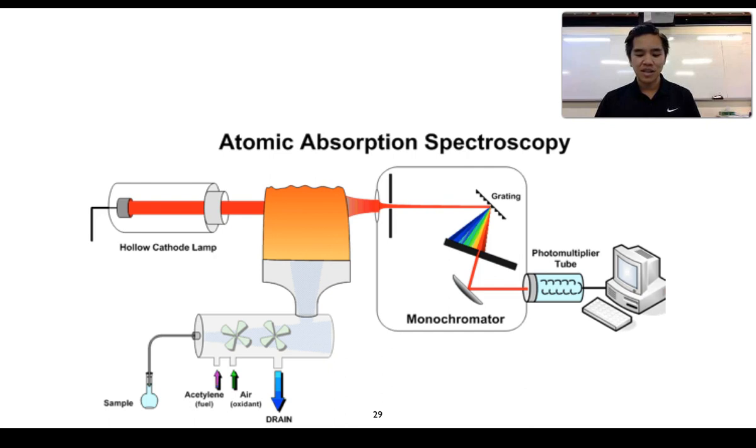The only atoms in the sample that will absorb the radiation from the cathode lamp are going to be the same types of atoms as those in the cathode lamp. The greater the concentration of those atoms present, the more radiation will be absorbed. And almost instantaneously, the radiation will be re-emitted, but in all directions. If all wavelengths of radiation are absorbed from the sample, the sample contains the same metal present in the cathode lamp.